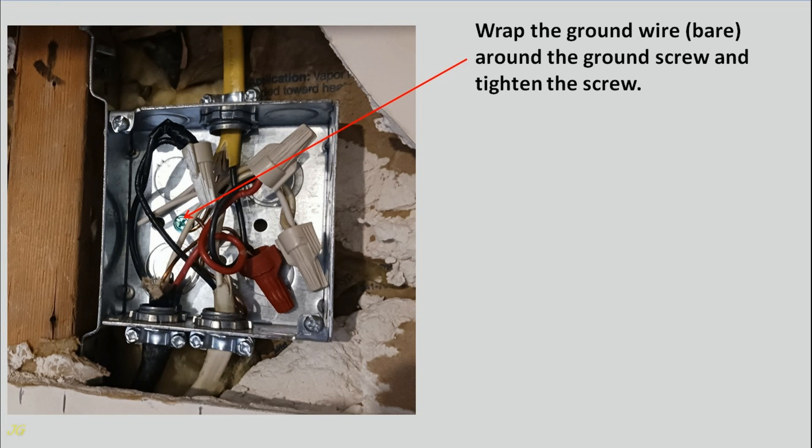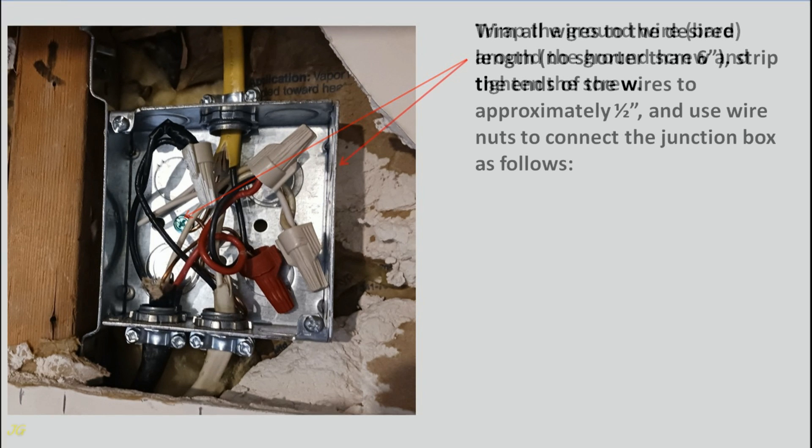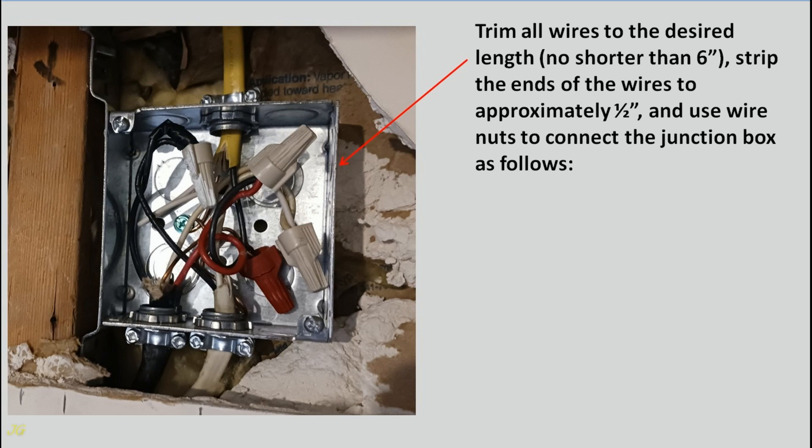Wrap the ground wire bare around the ground screw and tighten the screw. Trim all wires to the desired length, no shorter than six inches. Strip the ends of the wires to approximately one half inch and use wire nuts to connect the junction box as follows.